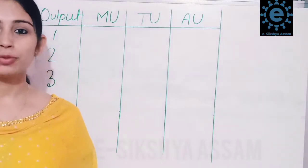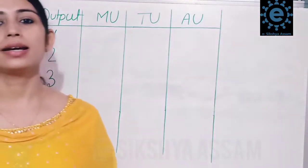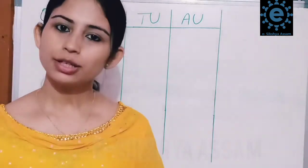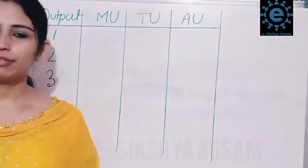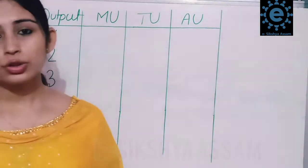So to summarize: total utility, marginal utility, and average utility are all related to Q, the quantity consumed.